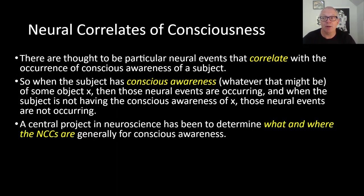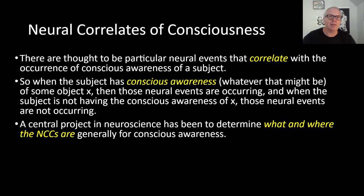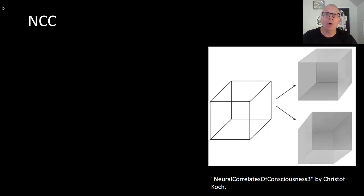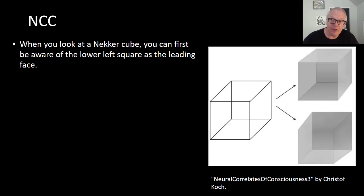A central project in neuroscience has been to determine what and where the NCCs are generally for conscious awareness. Prinz is using a lot of that empirical research to triangulate and narrow down just what aspects of consciousness and where they're located in the brain — what features we're going to include in our account of consciousness and which ones we're not. That's ultimately how we get to the AIR theory of consciousness. So let me expand on this notion of neural correlates of consciousness — I've talked about the Necker cube before. That's this famous diagram.